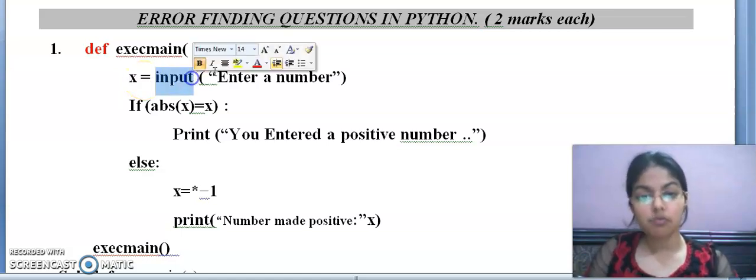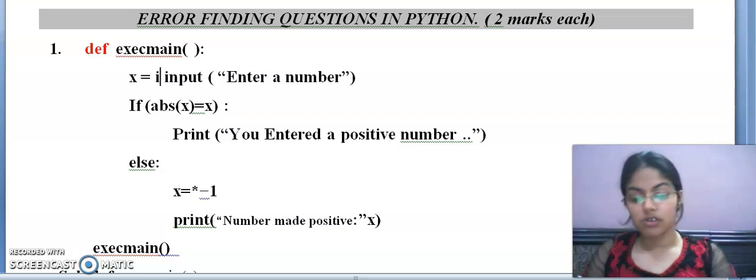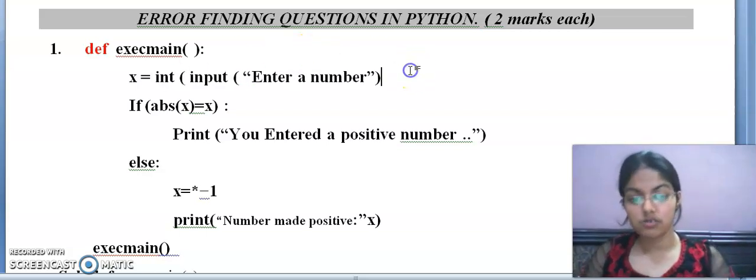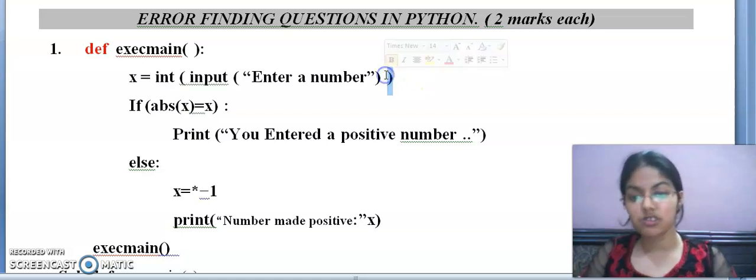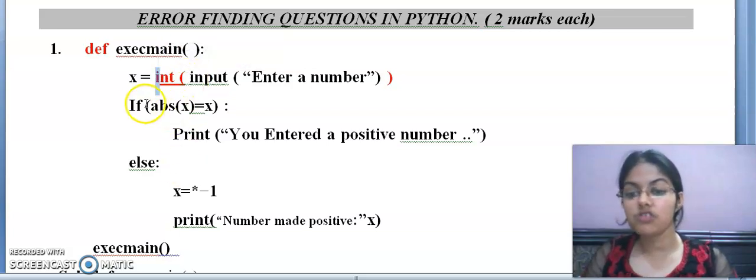When you are going to write the next line after the function header, it must be indented. Here indentation is given, so this is correct. X equals to input enter a number. That means you're asking the user to enter a number. In the next line, you are going to find the absolute value of a number.